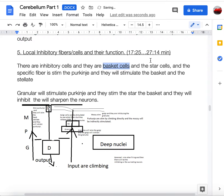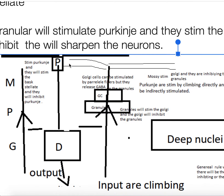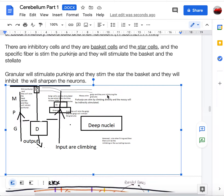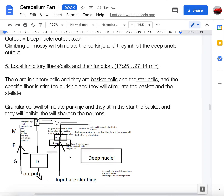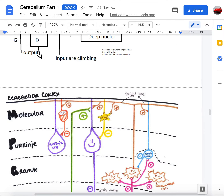There are also inhibitory interneurons: basket cells and stellate cells located in the molecular layer. Whenever a Purkinje cell gets excited, basket and stellate cells are there to inhibit it. The general rule is that when a neuron fires, it is surrounded by inhibitory neurons — analogous to how success attracts haters. Granule cells stimulate Purkinje cells, and basket/stellate cells then inhibit the Purkinje cells — a double-edged mechanism.